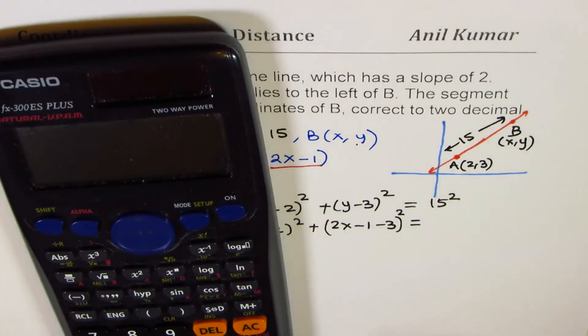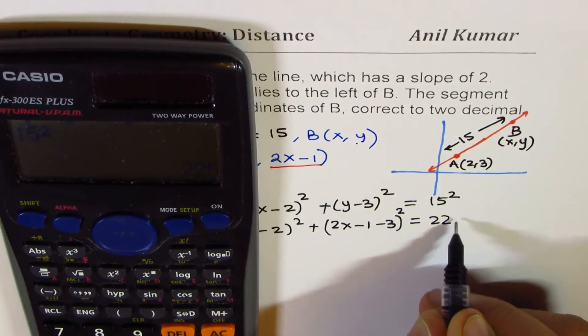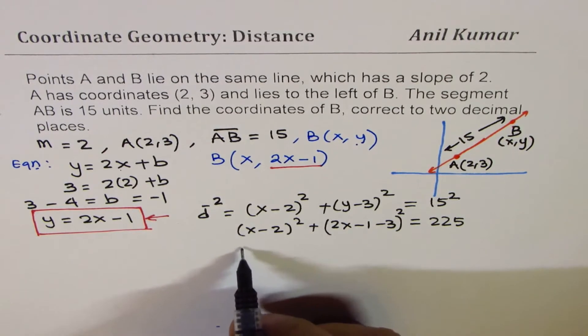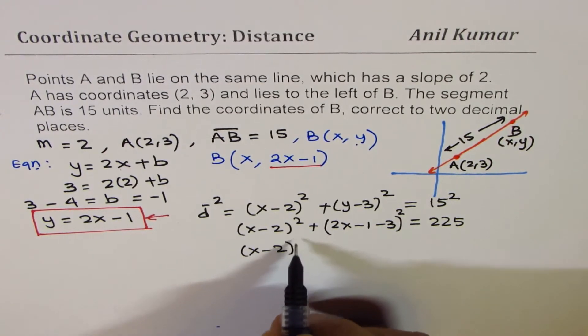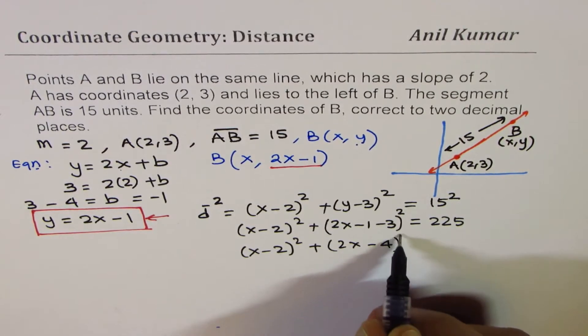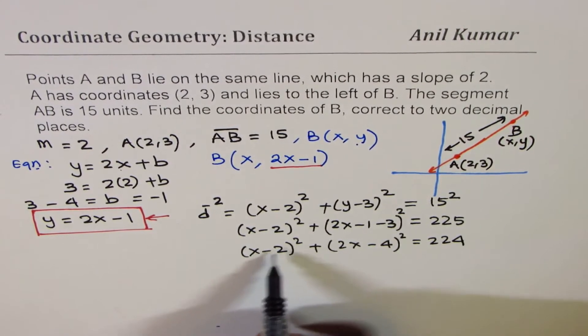What is 15²? We can use the calculator and write down this as 225. We can still simplify this portion. We have (x - 2)² + (2x - 4)² = 225. Now, let us expand it.